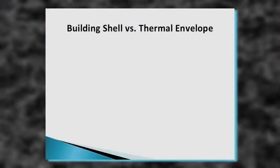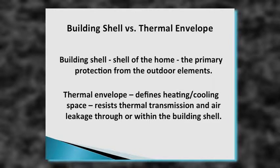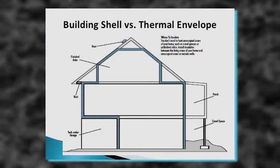First, let's talk about building shell versus thermal envelope. A building shell is the primary protection from outdoor elements. If it's raining outside and you're dry, you're inside the building shell. The thermal envelope defines the heating and cooling space, and also resists thermal transmission and air leakage — assuming the thermal barrier and air barrier are aligned. So if it's raining outside and you are both warm and dry, you're inside the thermal envelope.